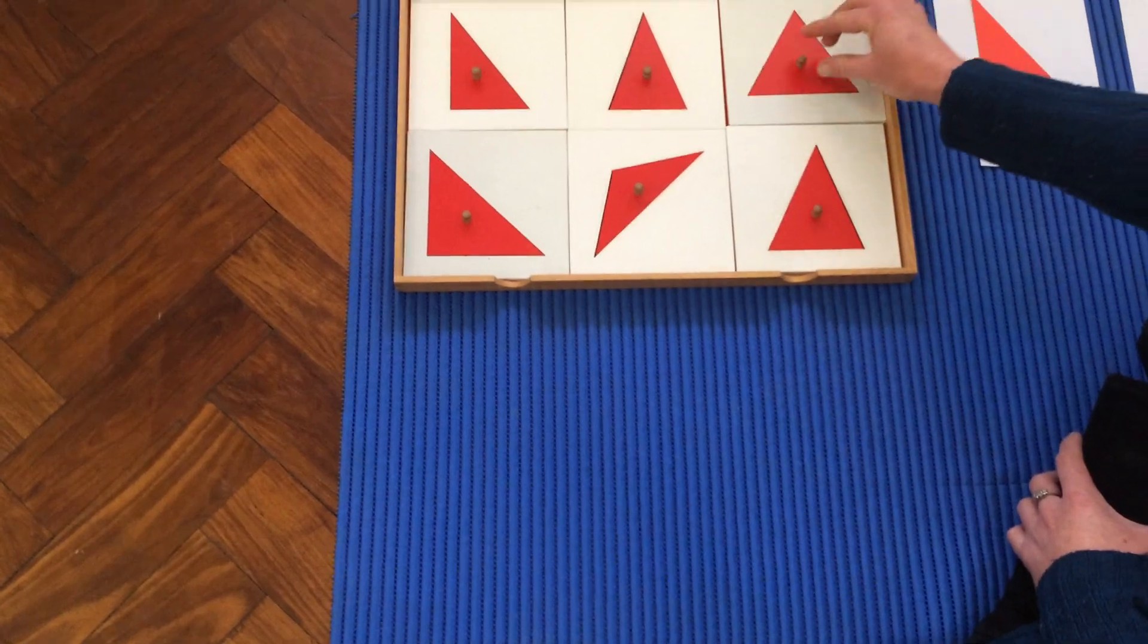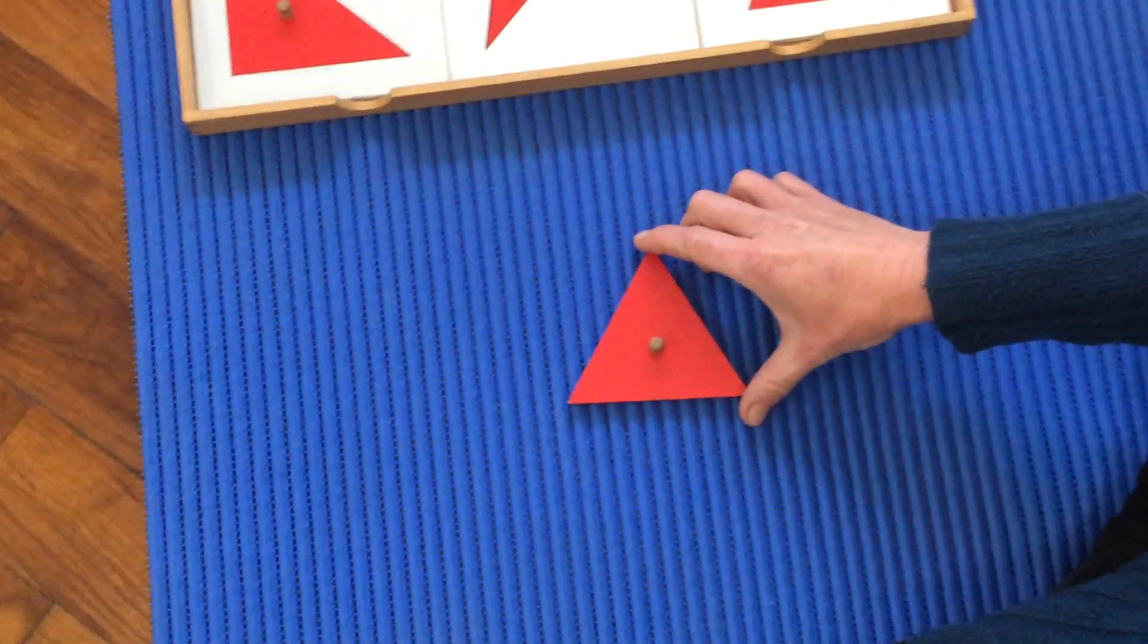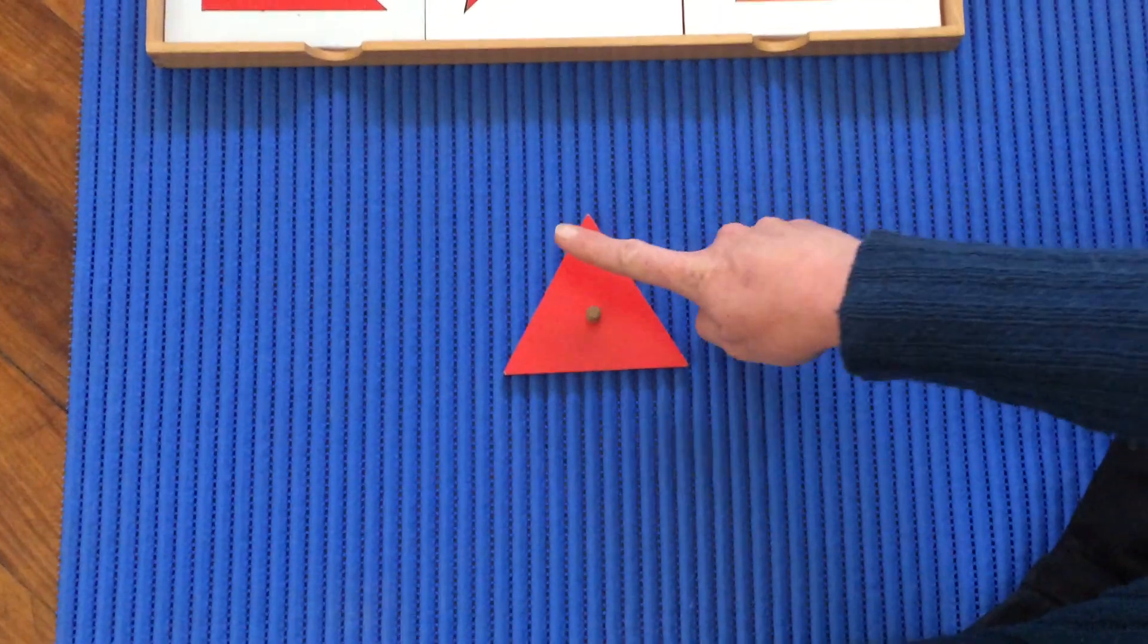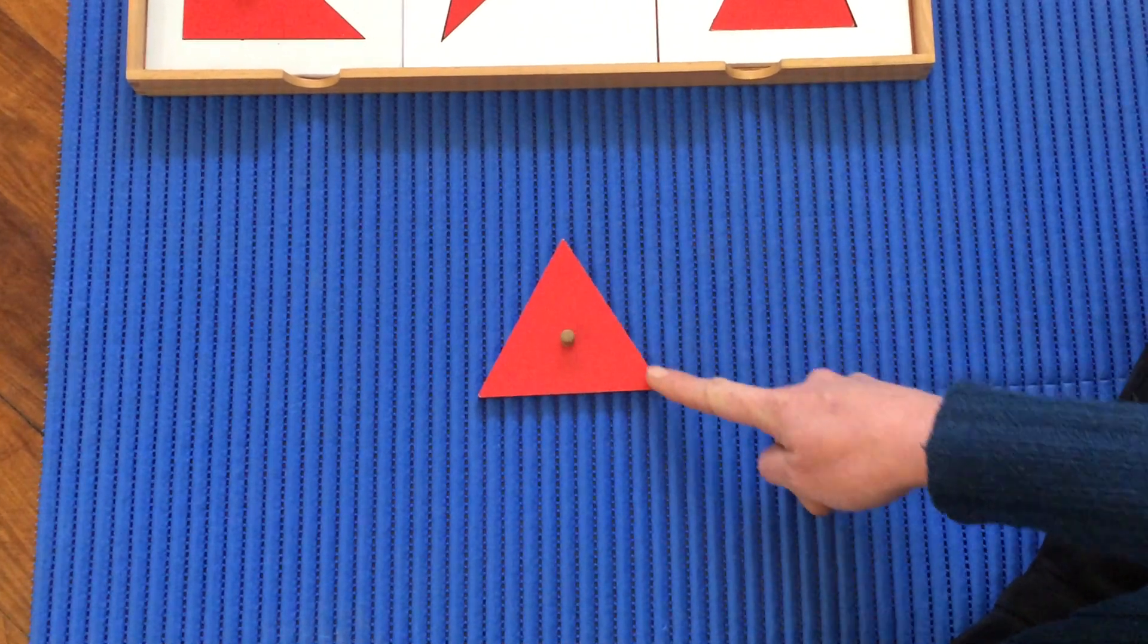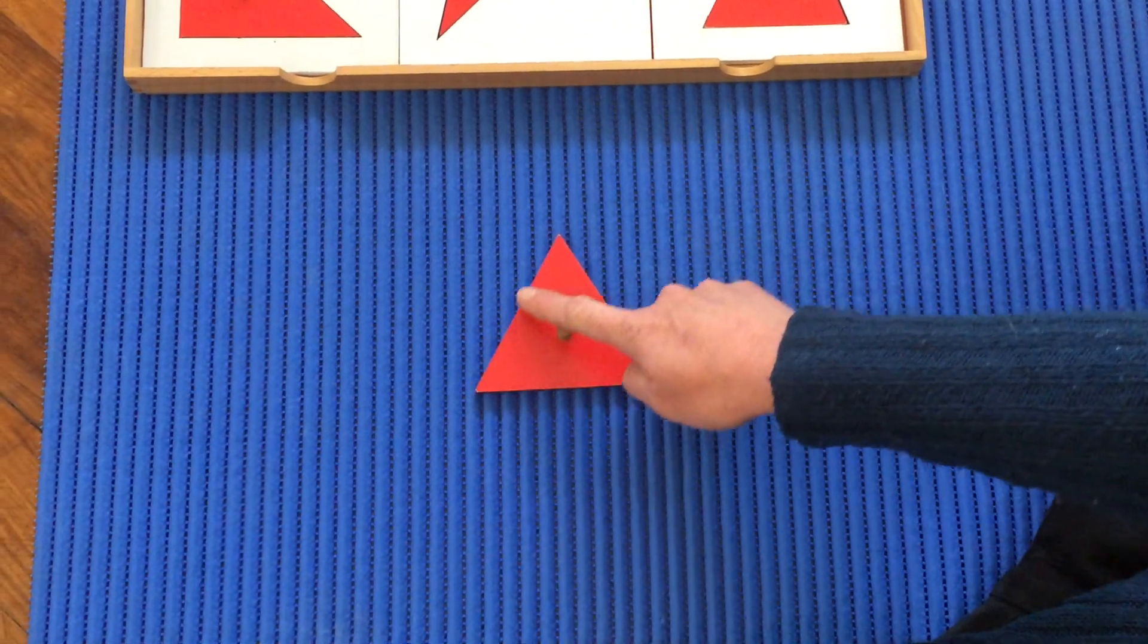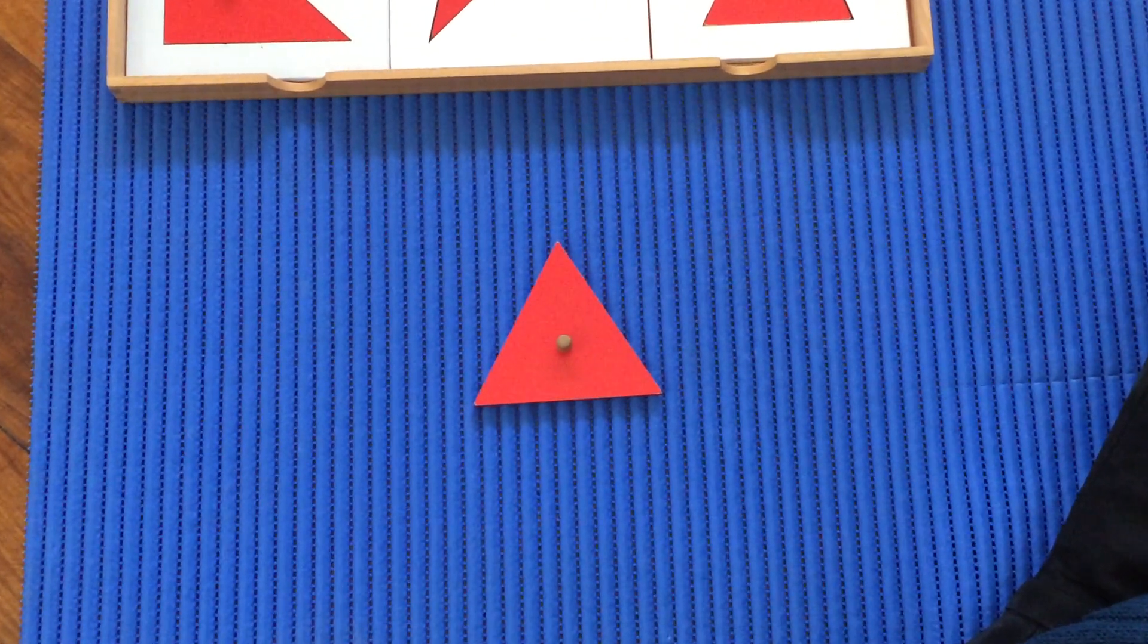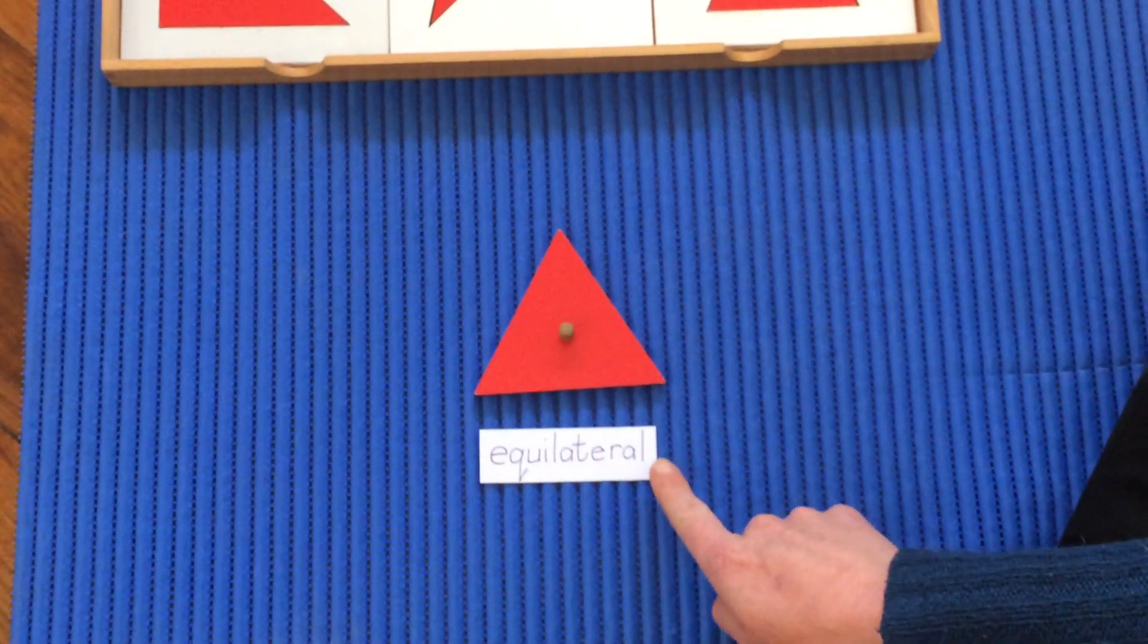The last triangle we're going to look at for today has three sides that are equal. All three sides are the same length. And this triangle's special name is equilateral. This word says equilateral.